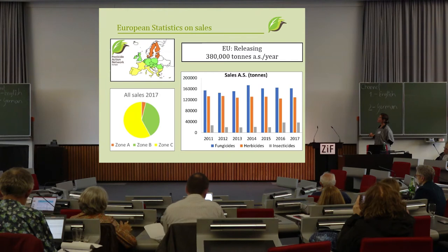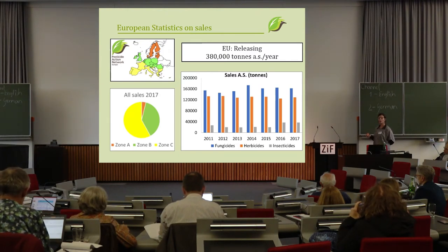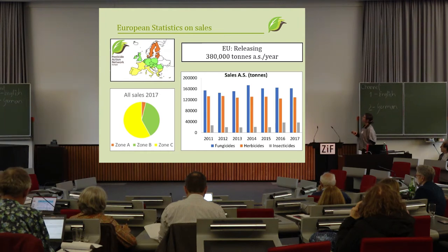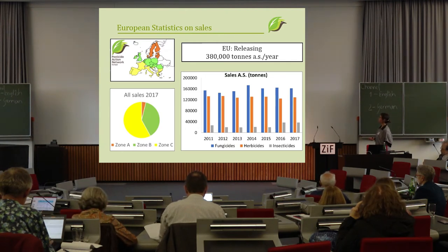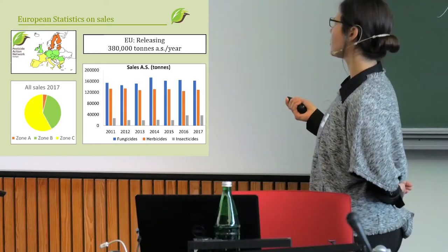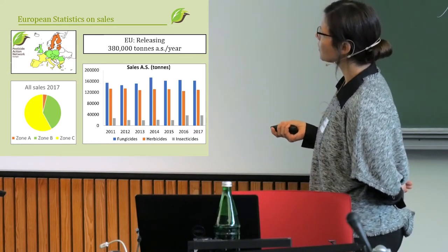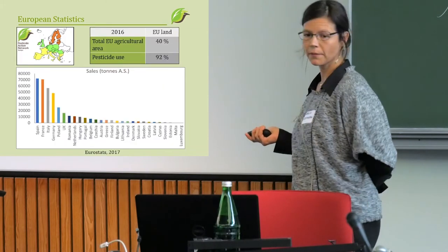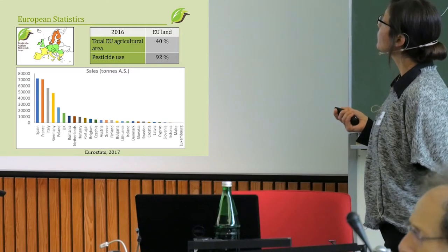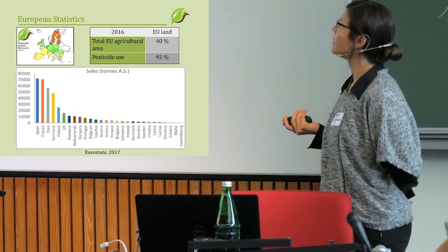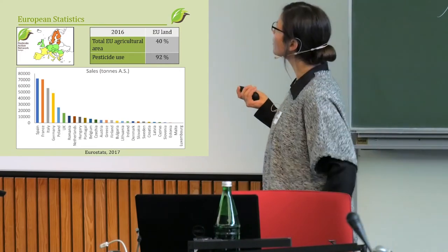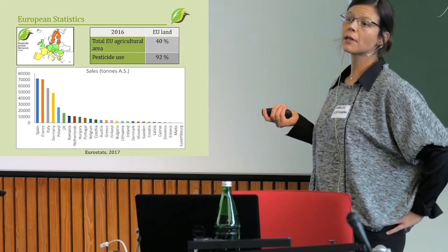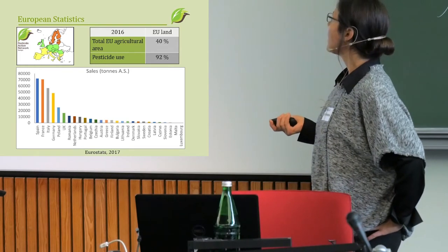We don't know exactly how much pesticides are used, but we know how much is bought. Data on specific pesticides are not public, only group data. We know that 380,000 tons of active pesticides are purchased per year, and usage has not changed much in recent years. Southern European countries use the most, followed by central Europe and then the north. Approximately 40% of the entire European area is used for agriculture.